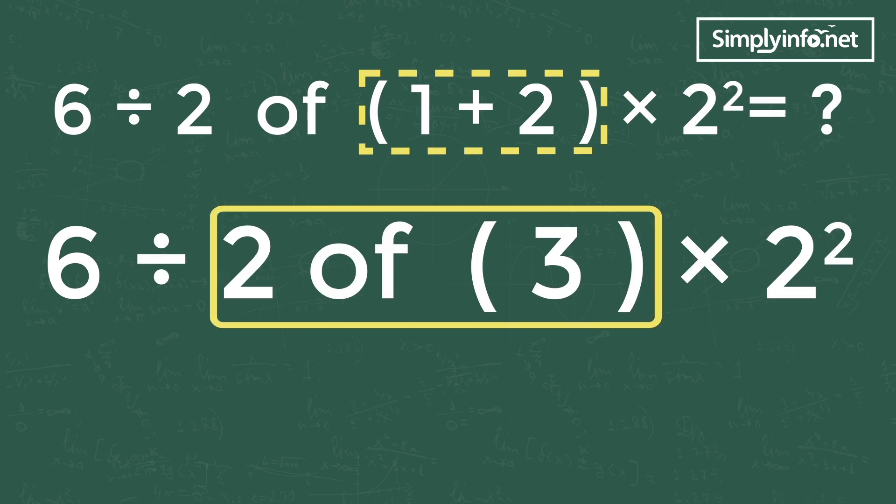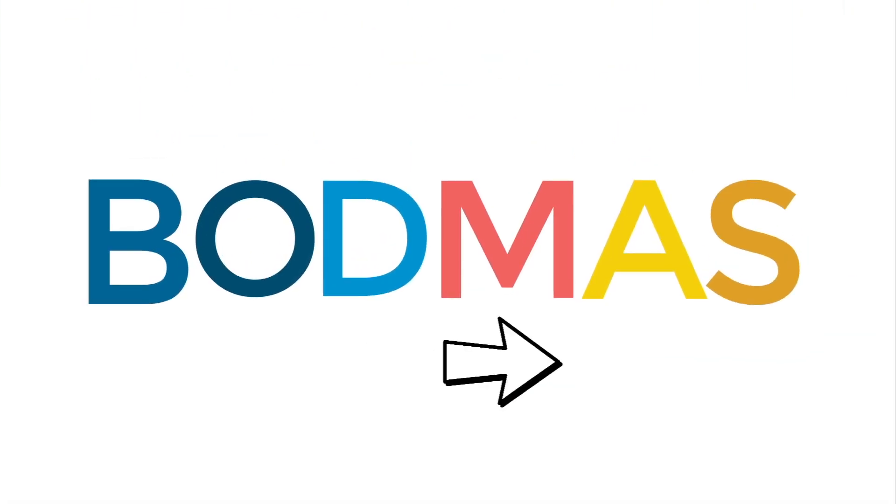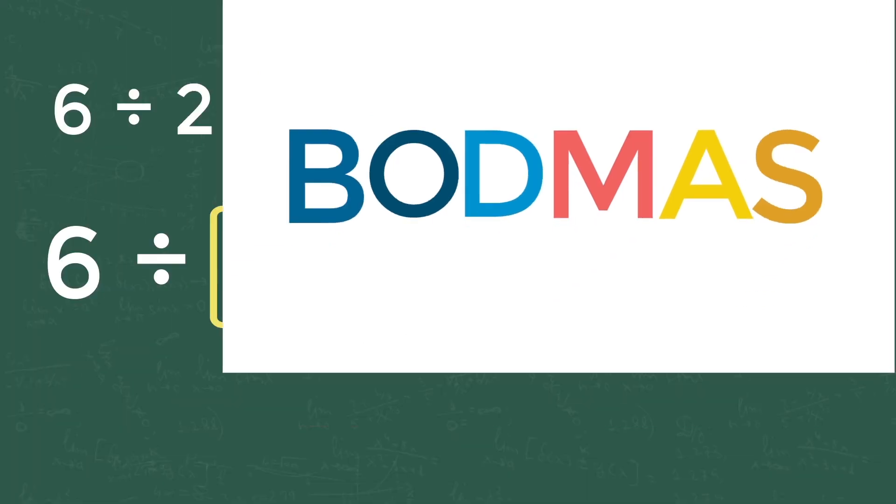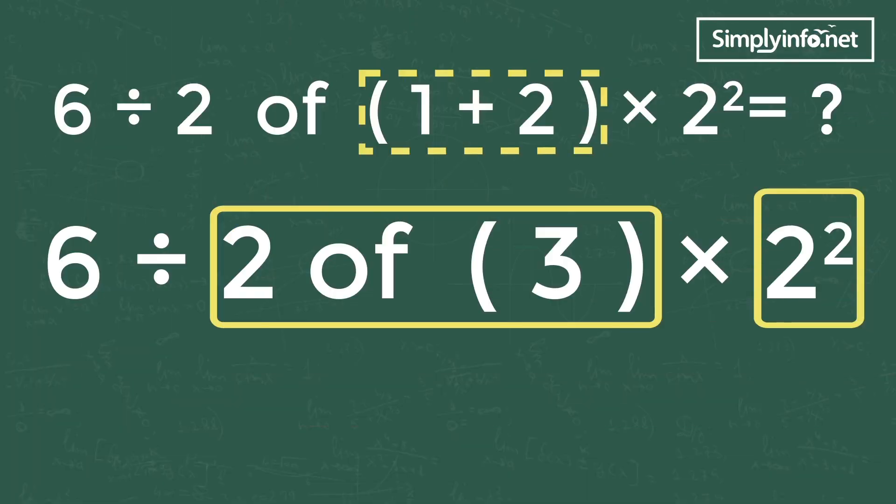Again, as per BODMAS rule, we need to solve the operations from left to right. Then the equation becomes: 2 of 3 is 6, and 2² is 4.